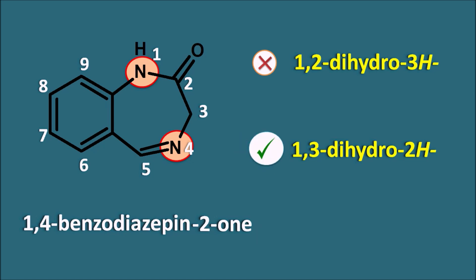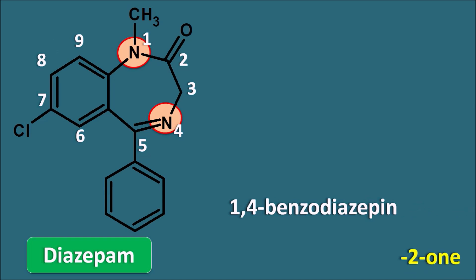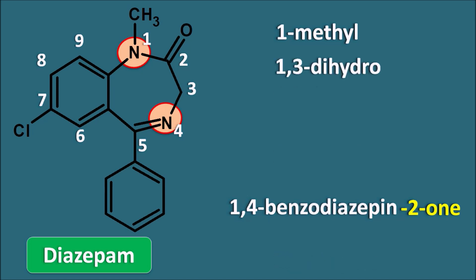Now let us take an example — diazepam. This has nitrogens at positions 1 and 4, making it a 1,4-benzodiazepine, and a ketone at position 2, so the root name is 1,4-benzodiazepine-2-one. At position 1 there is a methyl group, positions 1 and 3 are saturated giving 1,3-dihydro, position 5 has phenyl, position 7 has chloro, and 2H is the indicated hydrogen placed just before the root name.